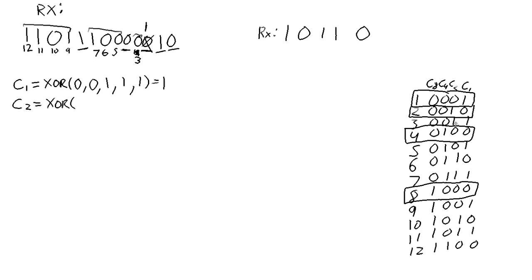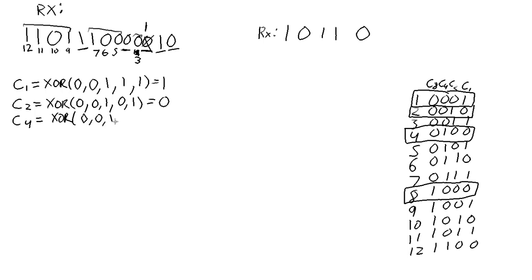Now we need C2. C2 is calculated from bit positions 3, 6, 7, 10, and 11. Bit 3 is a zero, bit 6 is a zero, bit 7 is a one, bit 10 is a zero, and bit 11 is a one. We have two ones — an even number — so this check bit is going to be a zero. Next we calculate C4, which uses bit positions 5, 6, 7, and 12. Bit 5 is zero, bit 6 is zero, bit 7 is one, and bit 12 is one. We have an even number of ones, so C4 is also zero.